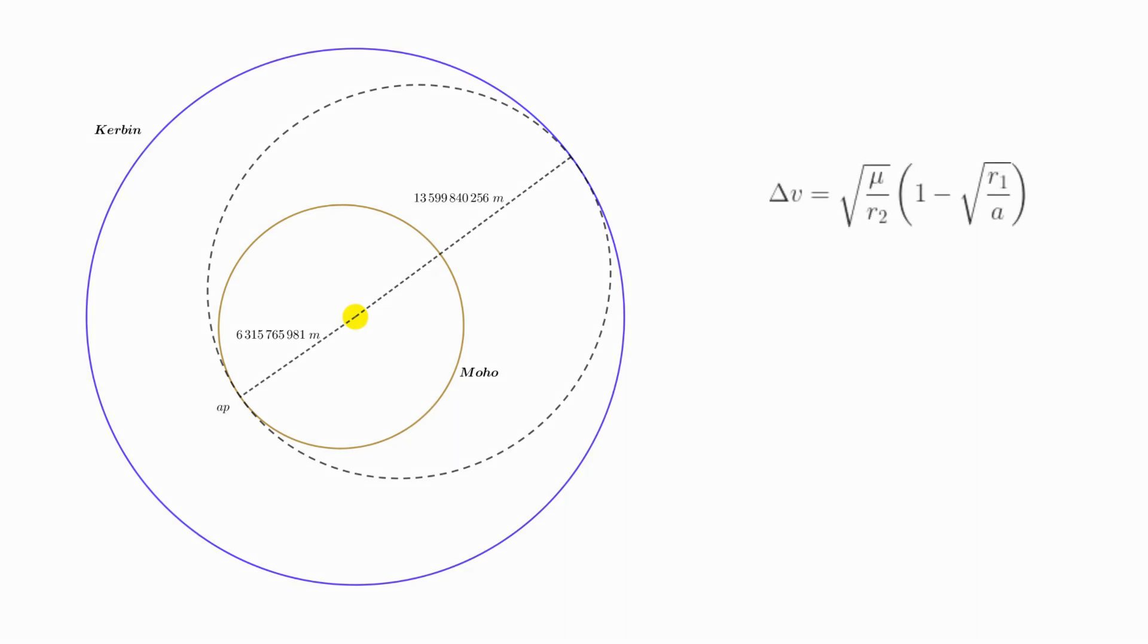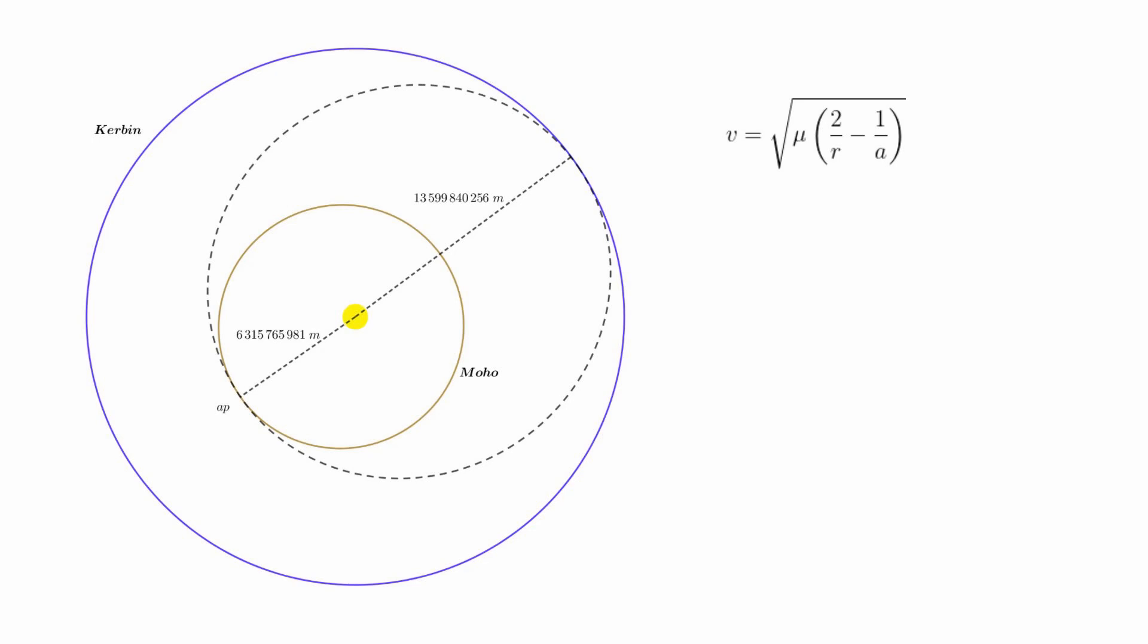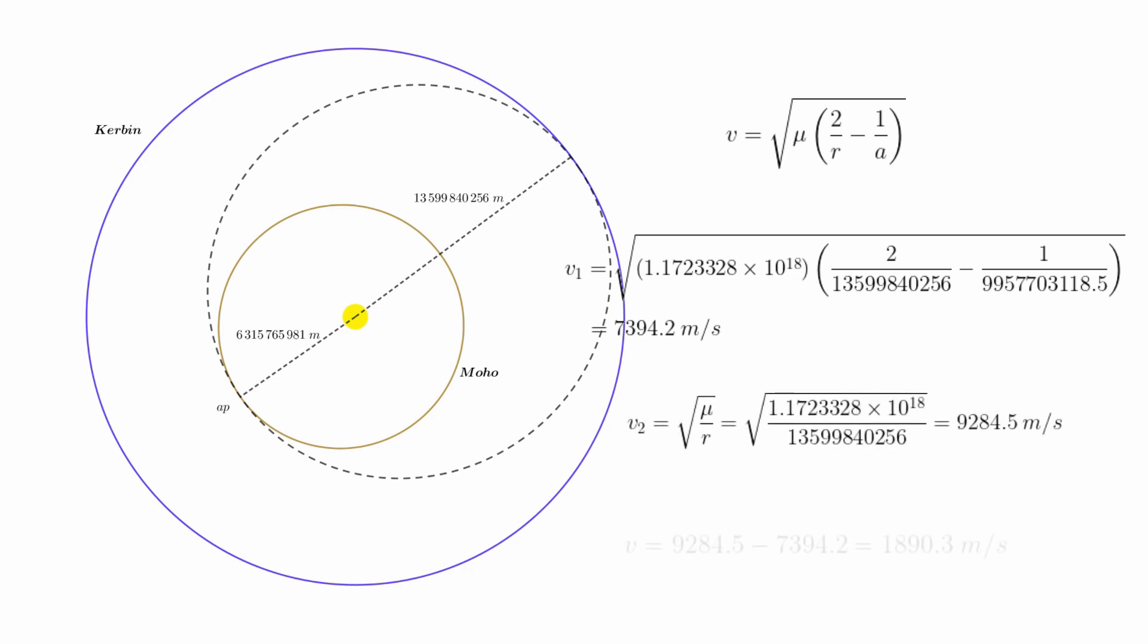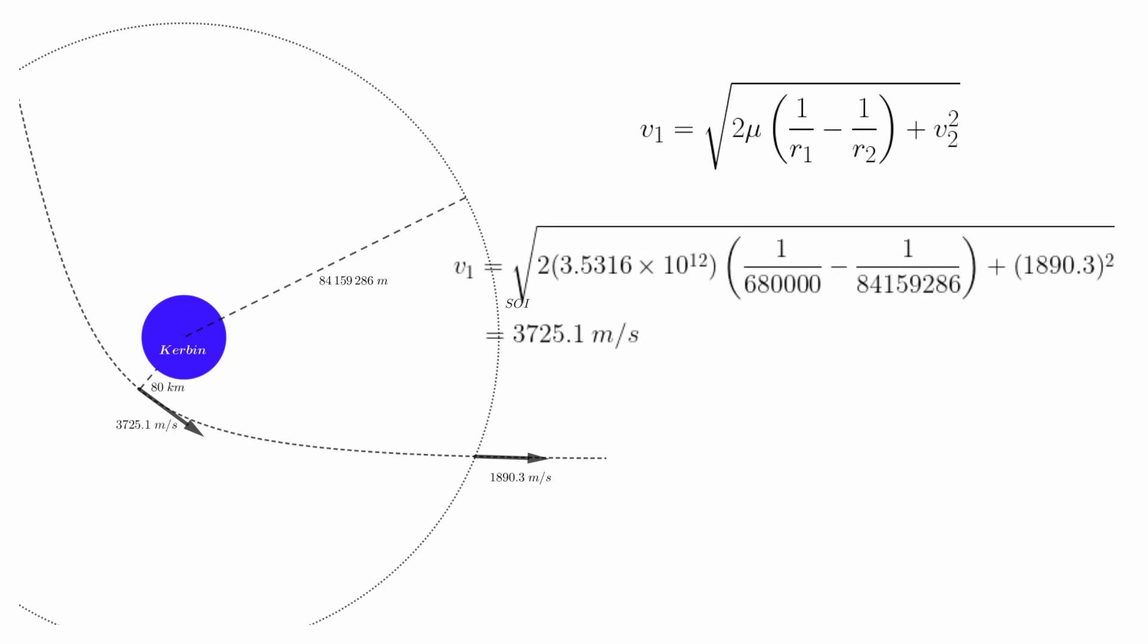Recall from last episode that we can use the second vis-viva equation to calculate the velocity at which we must leave Kerbin's SOI. This gets us 1,890.3 meters per second. By the way, we now have a second way to calculate this number. We can use the velocity formula we developed this episode to calculate our velocity at the apoapsis of our transfer. This gets 7,394.2 meters per second. This is the orbital velocity relative to the sun. To get the velocity relative to Kerbin, we subtract off Kerbin's orbital velocity of 9,284.5 to get the same answer as before. Either way, we now need to shift our work to Kerbin's SOI to get the velocity we need at low Kerbin orbit. That's this formula. Substituting in, we get 3,725.1, and like we did before with DUNA, we subtract off our LKO orbital velocity of 2,278.9 to get the required ejection of 1,446 meters per second.